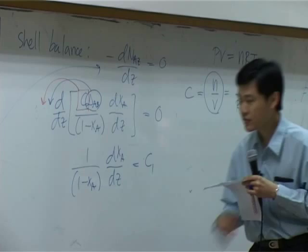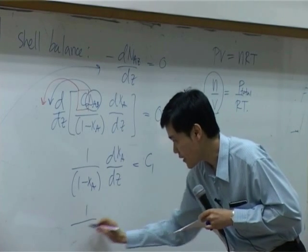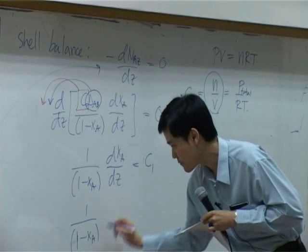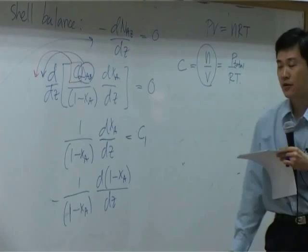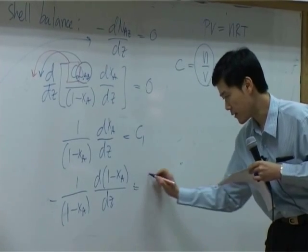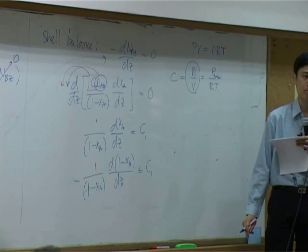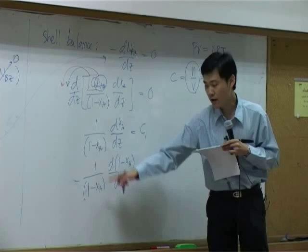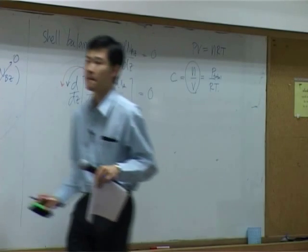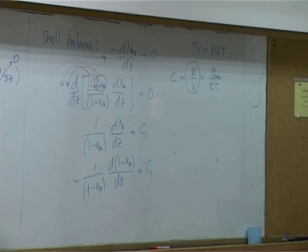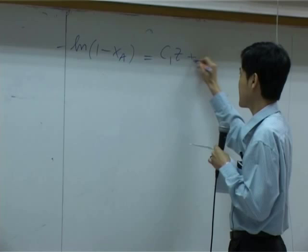Then, I can change the differentiation just a little. I can get 1 over 1 minus xA, change from dxA to d of 1 minus xA by dz, and I put minus sign up here, equal to c1. Right? I can do that. So then we have 1 over u du, and integration is simple. So if you take an integration, you get minus logarithm of 1 minus xA, equal to c1 times z plus another constant c2.